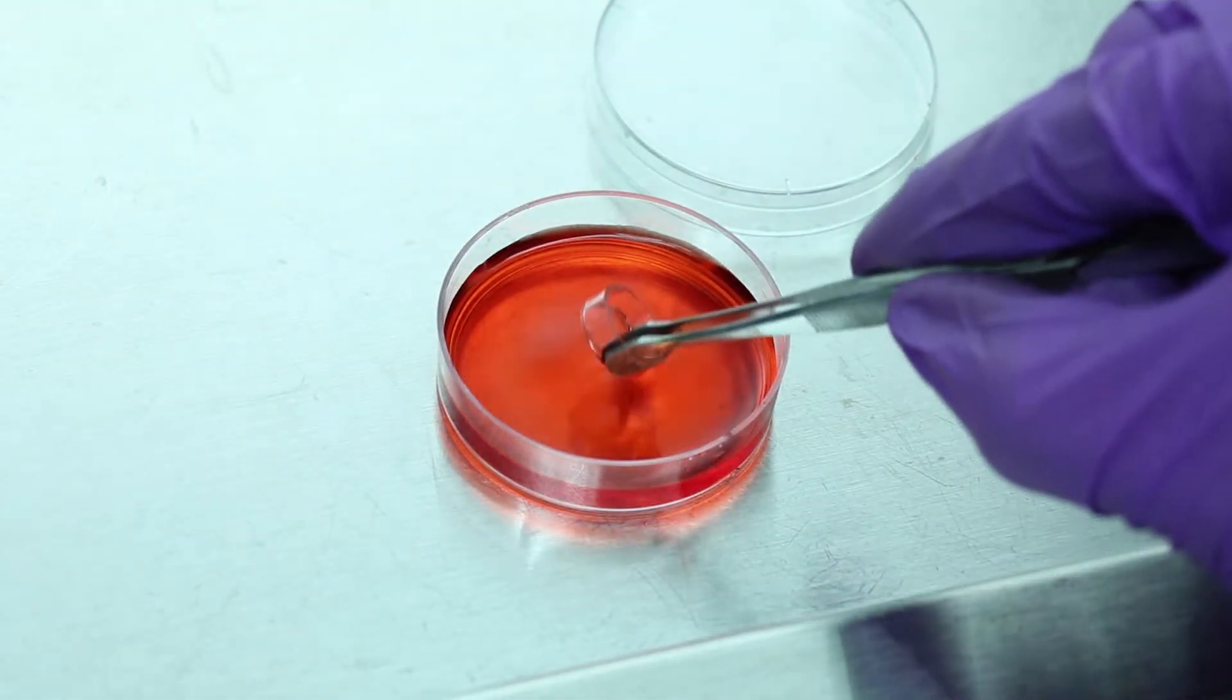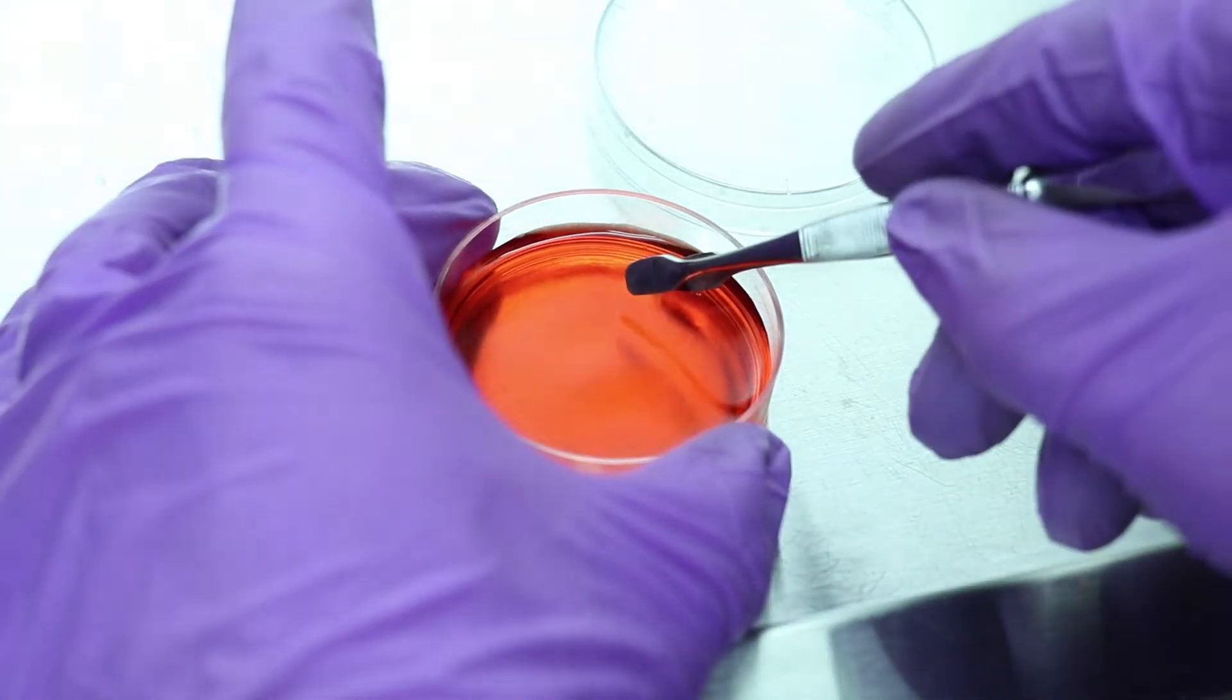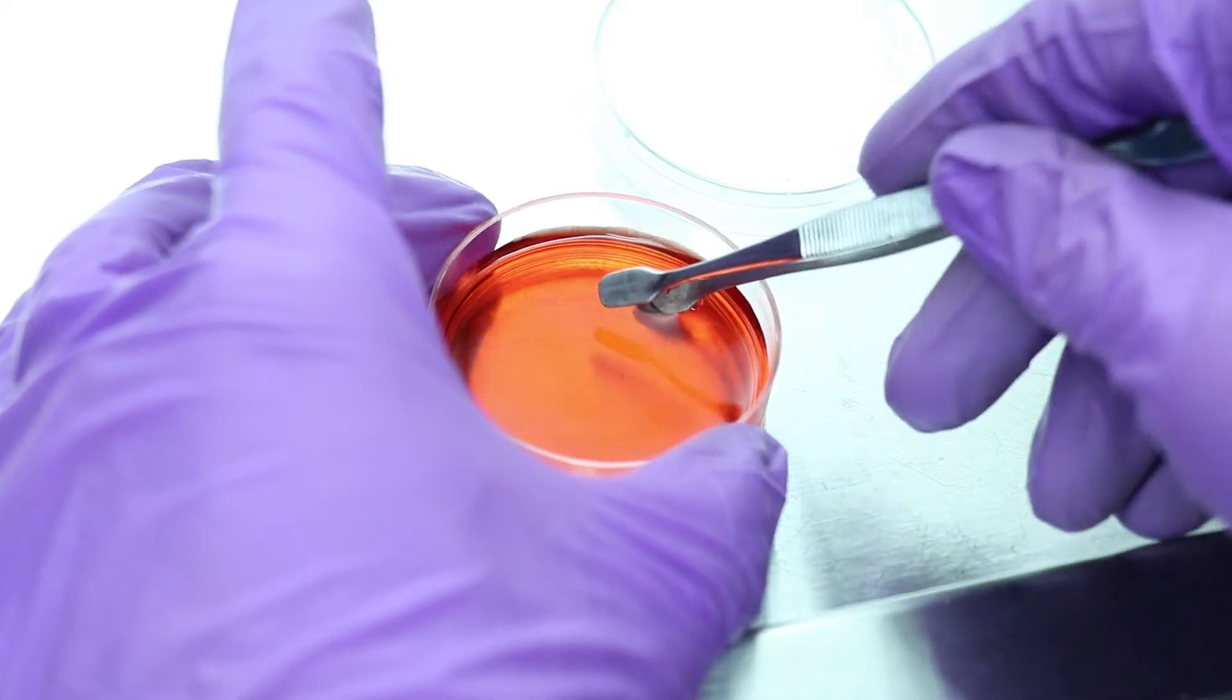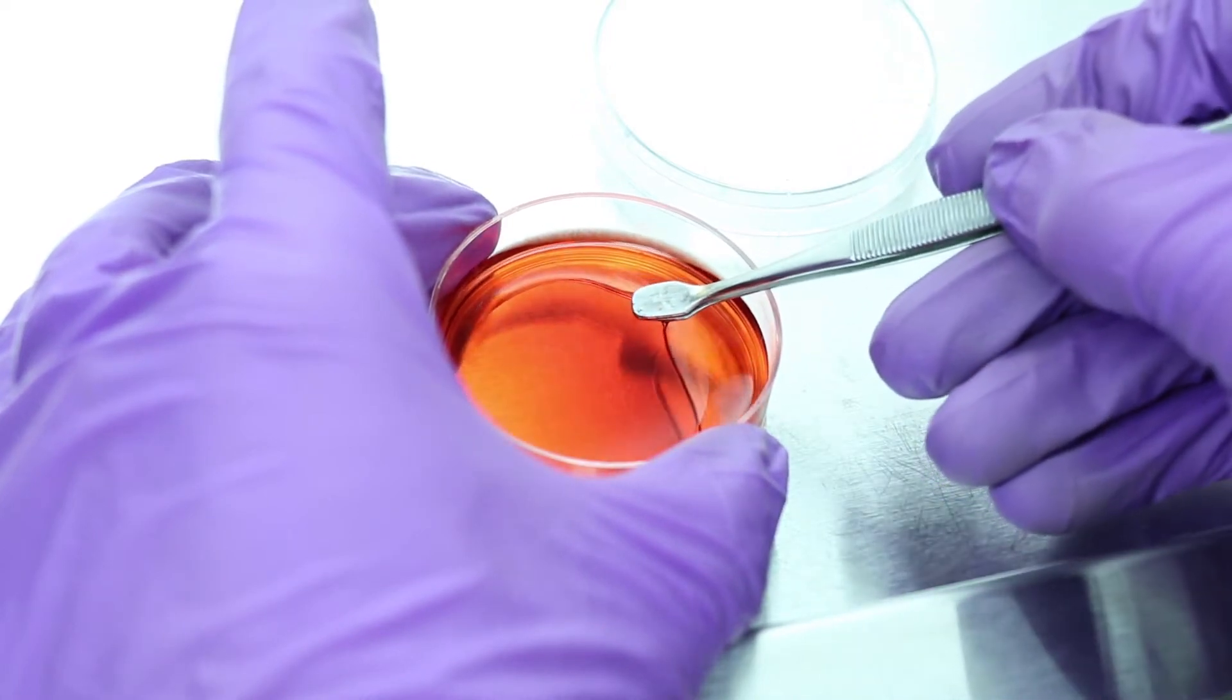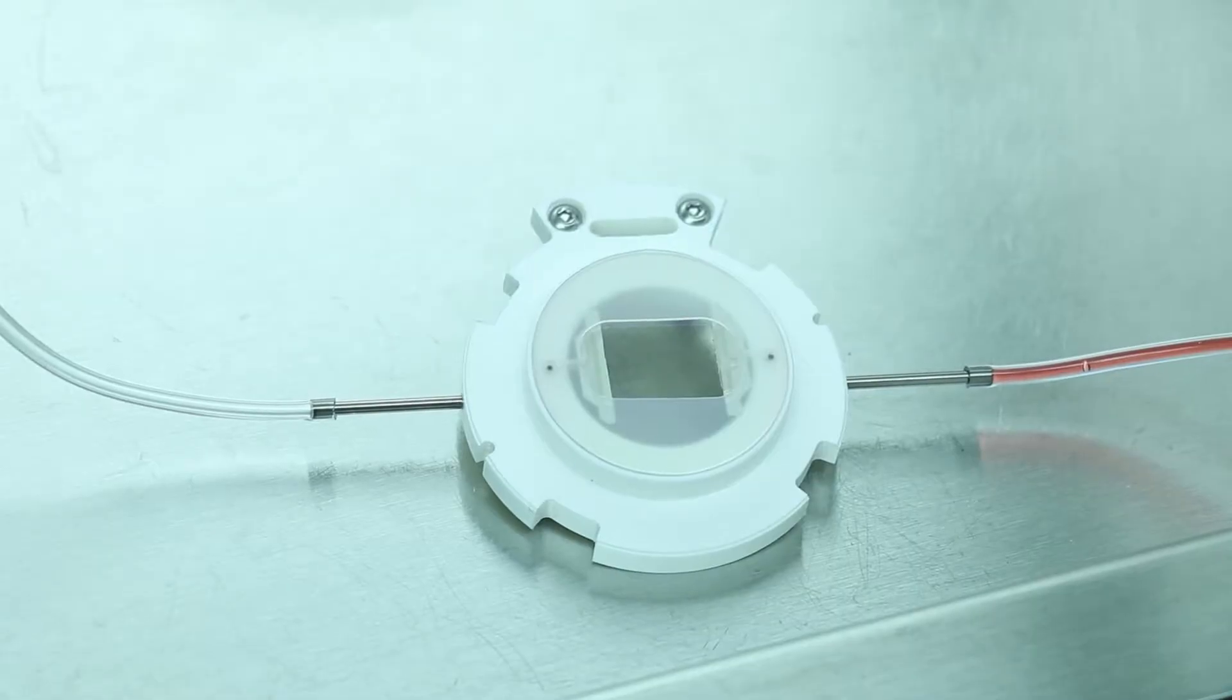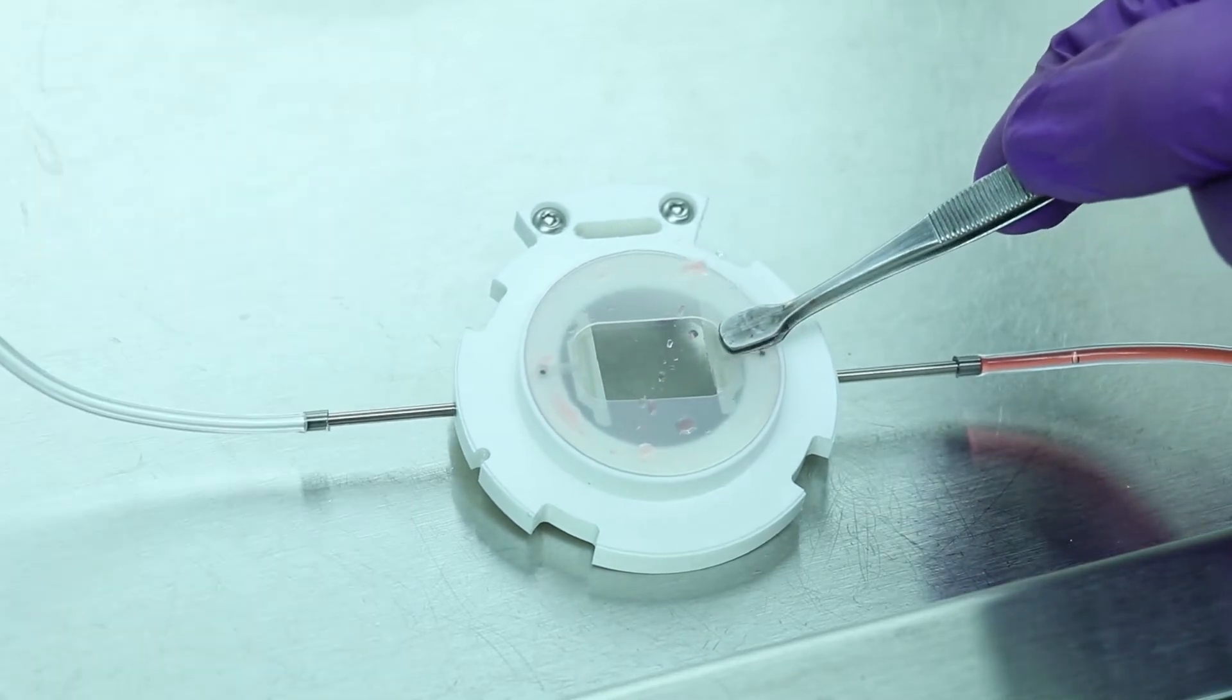Taking forceps, remove the culture cylinder. Then slide the forceps under the 40mm cover slip and remove from Petri dish. Place the 40mm cover slip, sample toward white top with gaskets.